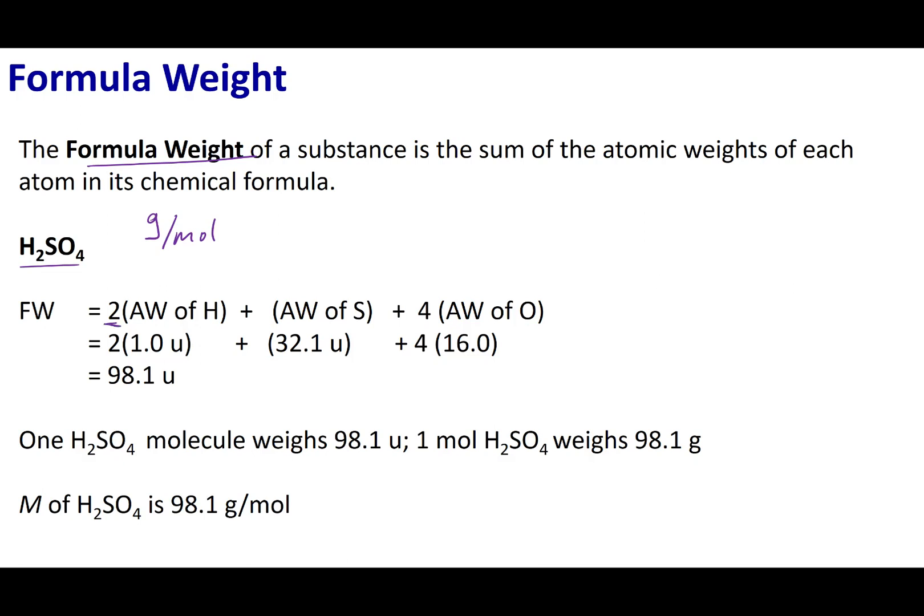For H2SO4, what I know is that there are two hydrogens. So I'm going to take two times its atomic weight. It has only one sulfur, so I'm just going to add the atomic weight of sulfur. And it has four oxygens. I'm going to look on the periodic table for the atomic weight of oxygen and times it by four. If I add that all up together, I get 98.1 atomic mass units.